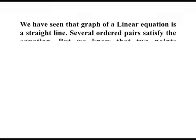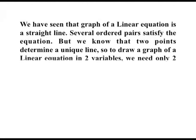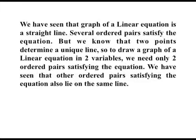Several ordered pairs satisfy the equation but we know that two points determine a unique line. So, to draw a graph of a linear equation in two variables, we need only two ordered pairs satisfying the equation. We have seen that other ordered pairs satisfying the equation also lie on the same line.